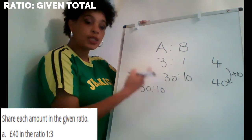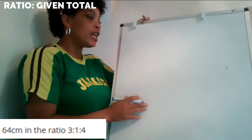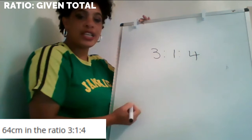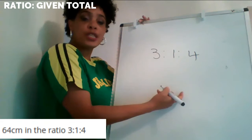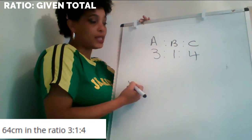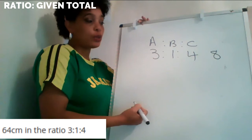The next question says: share 64 pounds in the ratio of three to one to four. I don't know who these parts are for, so I'm going to call them A, B and C. Counting the parts: four, five, six, seven, eight — so it's eight parts I'm going to share it into.